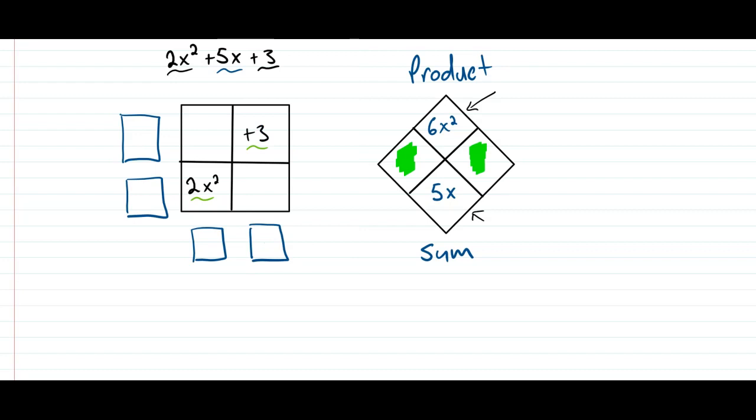The numbers that come to mind are 2x and 3x, right? 2x plus 3x is 5x squared and 2x times 3x is 6x squared.